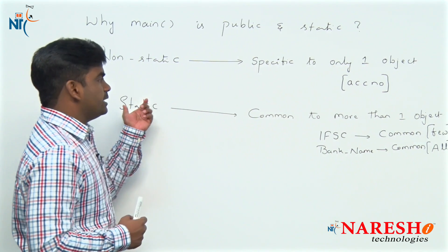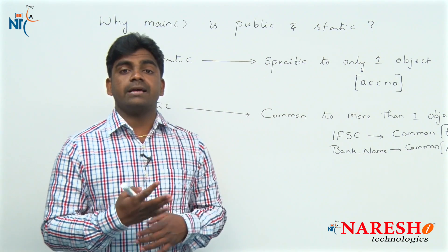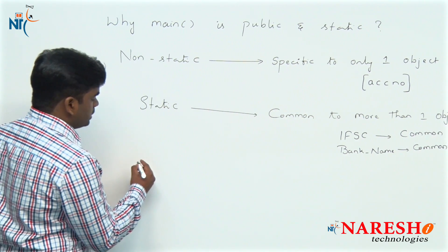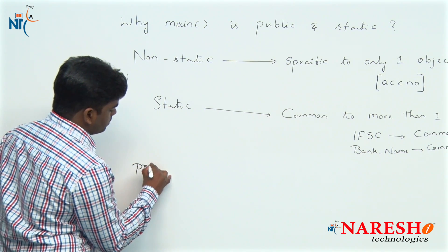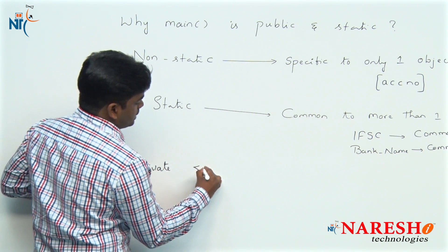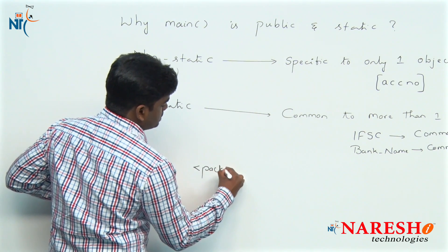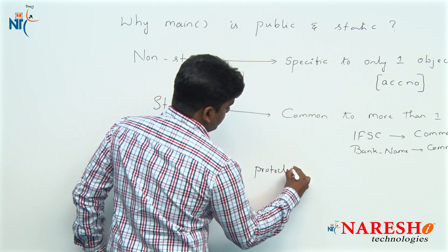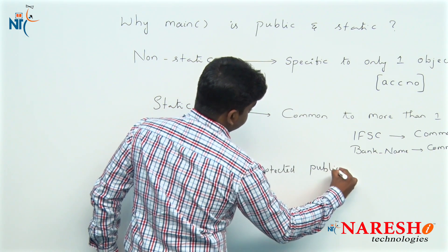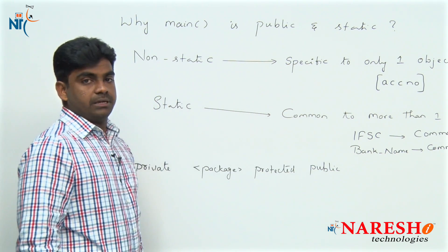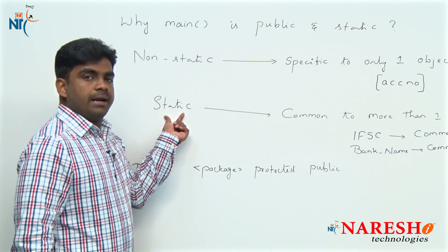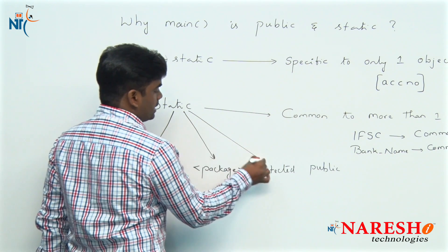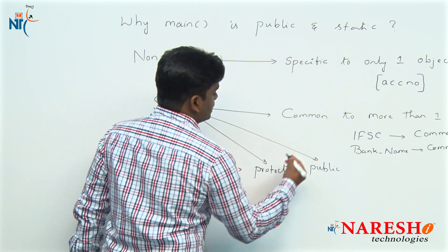That is why, along with the modifiers static and non-static, they introduced access modifiers also. Java has four access modifiers: private, default (which we can call package level), protected, and public. So we can specify static private, static package, static protected, or static public.